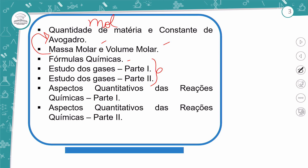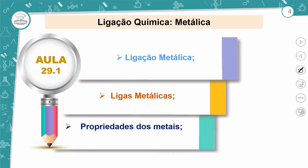Aí a gente vai se ver de novo no nosso segundo ano. E como eu falei, na aula de hoje nós vamos estar fechando sobre ligação química. Hoje nós vamos conhecer as ligações do tipo metálica, o que são ligas metálicas e as propriedades dos metais. Vocês lembram lá da tabela periódica? Como é que ela é estruturada?